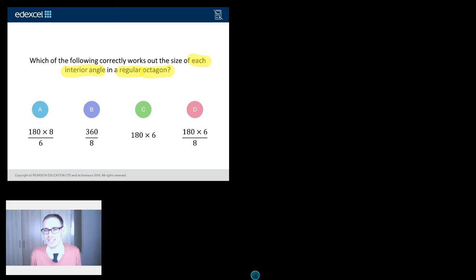What does it mean to have an interior angle? Well, if you think about a triangle, let's draw myself a beautiful triangle there, the interior angles are these ones. Interior simply means inside the shape.